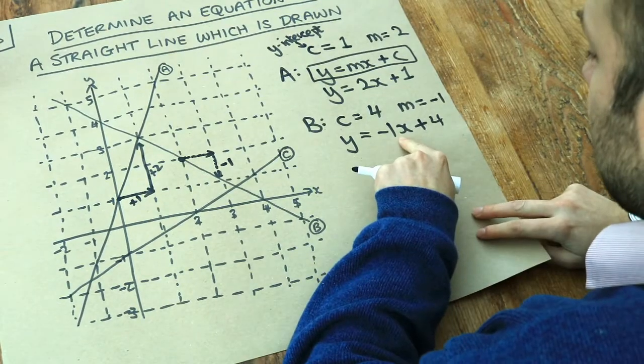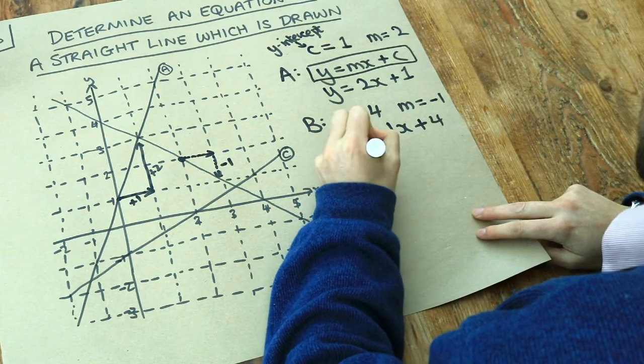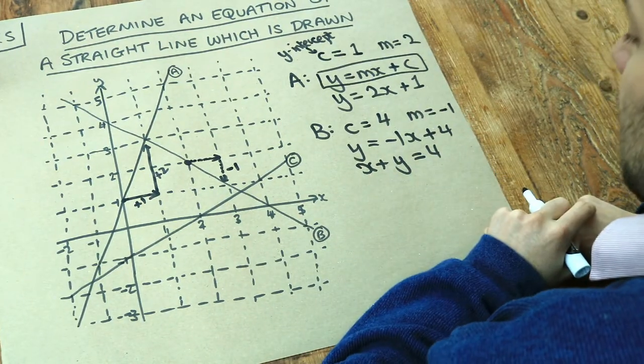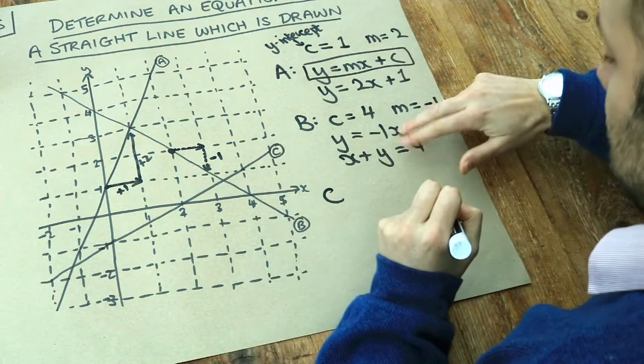And if you want, you could add x to both sides of the equation to get x plus y equals 4. And that's a slightly tidier way of writing it because we're not using any negatives there. But both these equations are right.